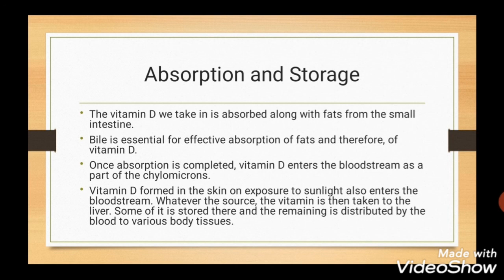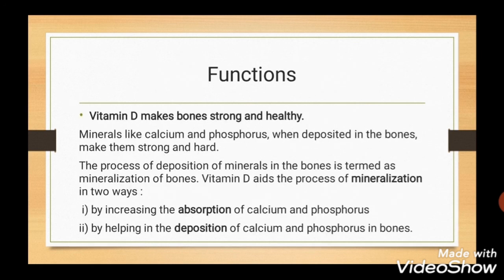After absorption, Vitamin D enters the bloodstream as part of chylomicrons. Vitamin D formed in the skin on exposure to sunlight also enters the bloodstream. Vitamin D is then taken to the liver, where some is stored and the remaining is distributed to various body tissues. Vitamin D makes bones healthy and strong by aiding the process of mineralization — the deposition of minerals like calcium and phosphorus in bones — both by increasing their absorption and by helping in their deposition in bones.